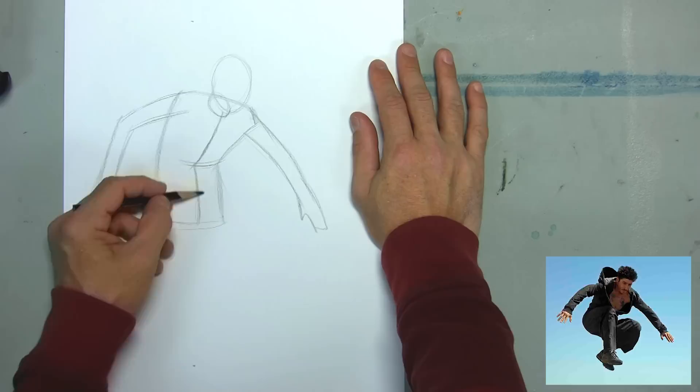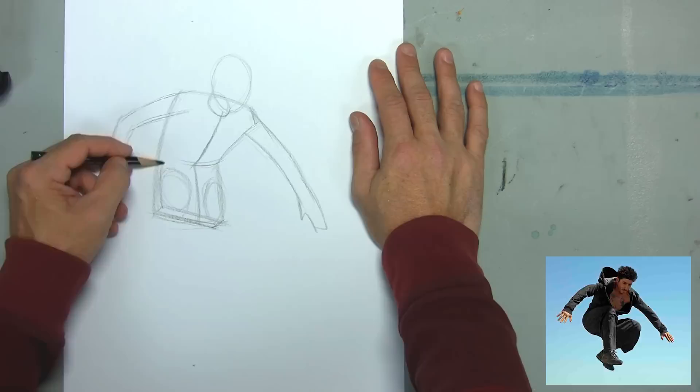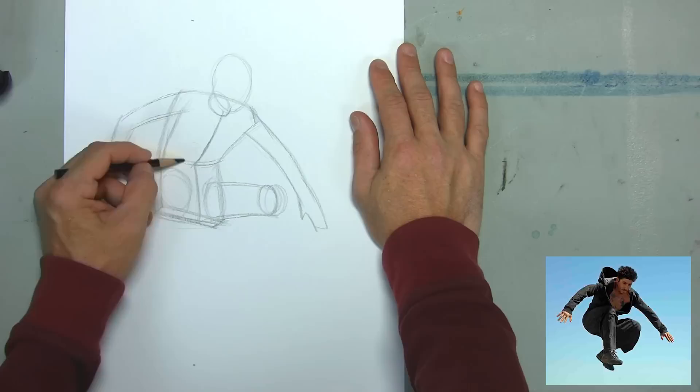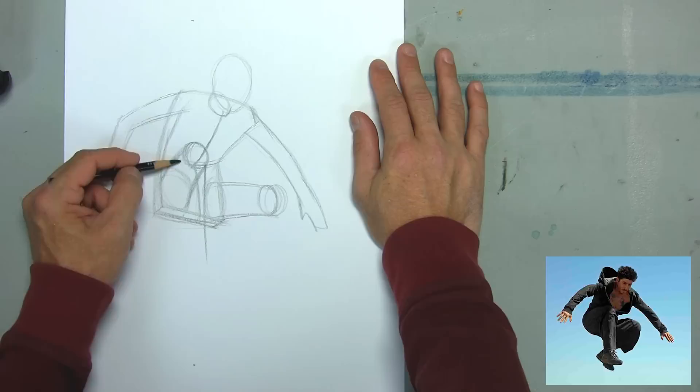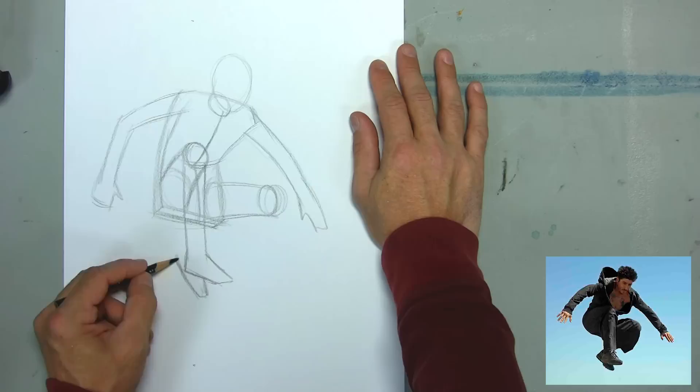Then I'm attaching arms and legs to that pillow shape in basic cylinder forms. And the cylinder only reads once we have ellipses put on them. So with the legs, automatically the back and the front are going to have their ellipses applied to them because they're moving forward towards us in a foreshortened state. While the arms are moving forward towards us, they aren't as foreshortened. So I just basically track them with two simple lines for now.